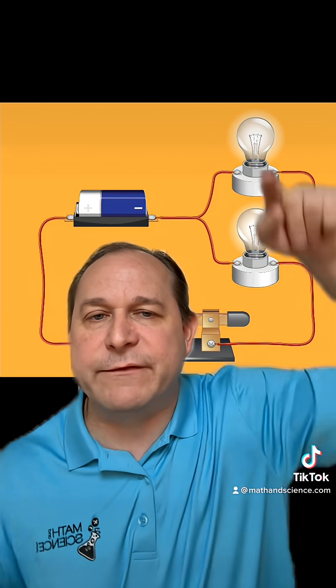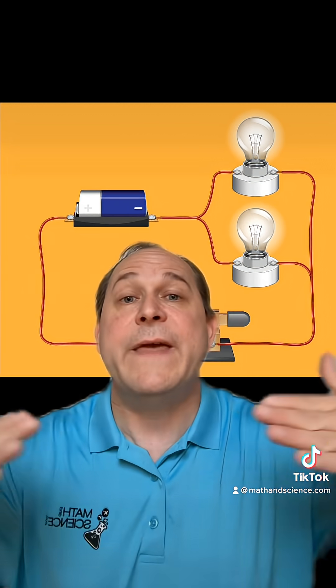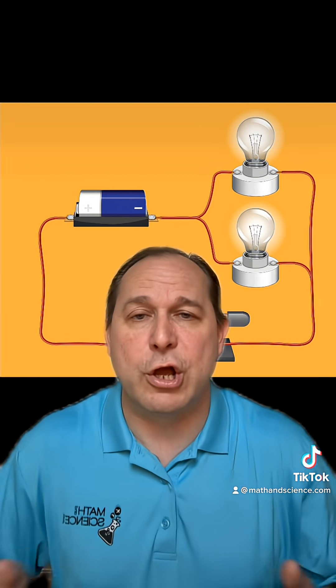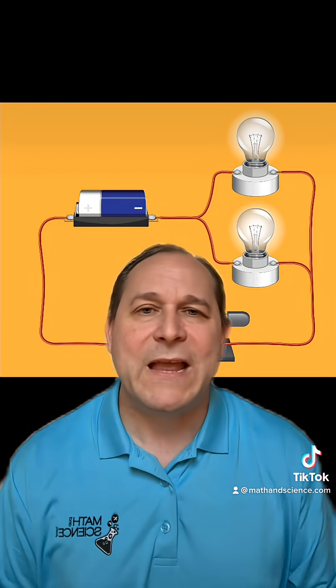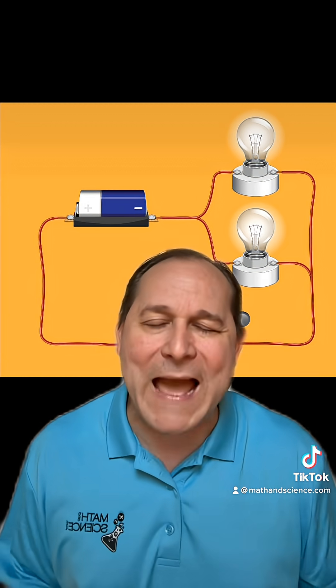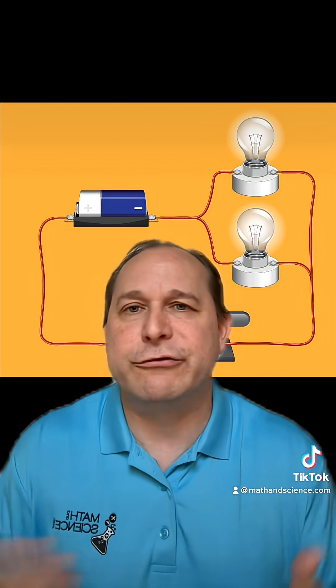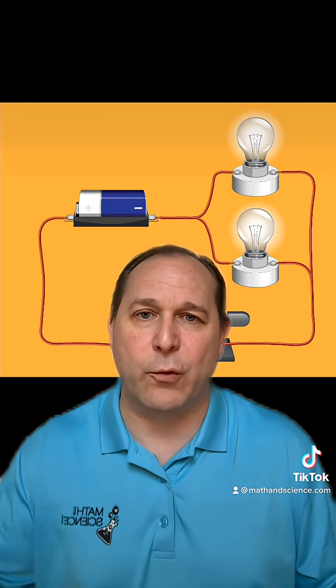But when they come back out to the other side over here and join back up at this node here, they recombine. So it's very similar to a garden hose with water splitting. And that's because electrons are made of matter, and so the conservation of matter always applies. And so you can't really create or destroy it, you have to account for it.